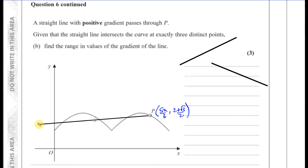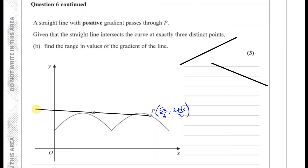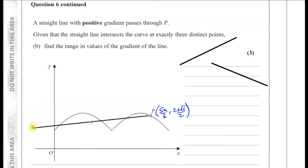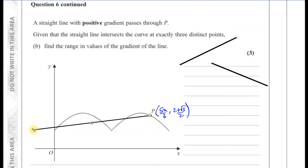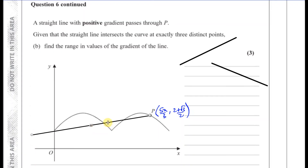If the line through P goes with a relatively shallow positive gradient, it passes through 1, 2, 3, 4 points including P — that's too many. If we raise the gradient, at some point it touches the curve — but that would give a negative gradient at that touching point. We want it going lower than horizontal but with positive gradient. At the lower limit, just below that gradient, we get 3 solutions including P.